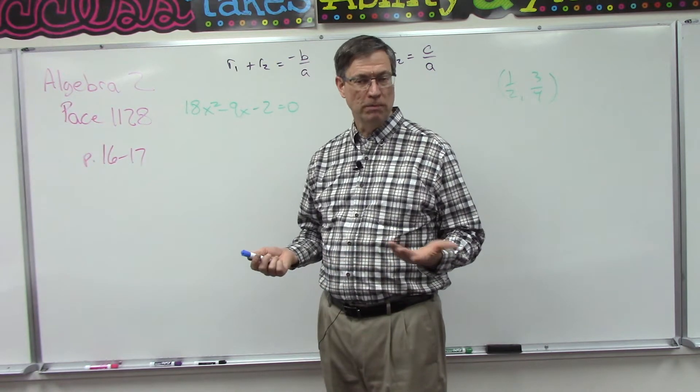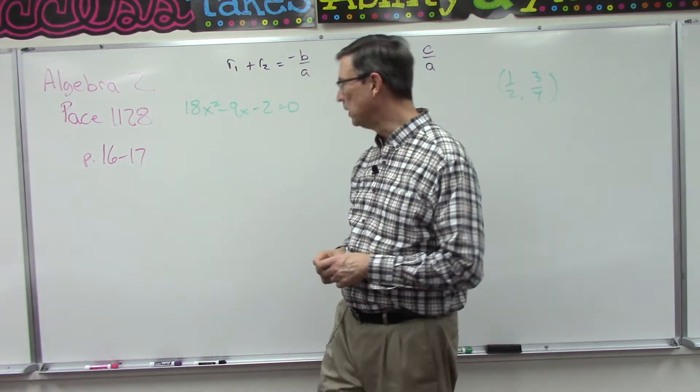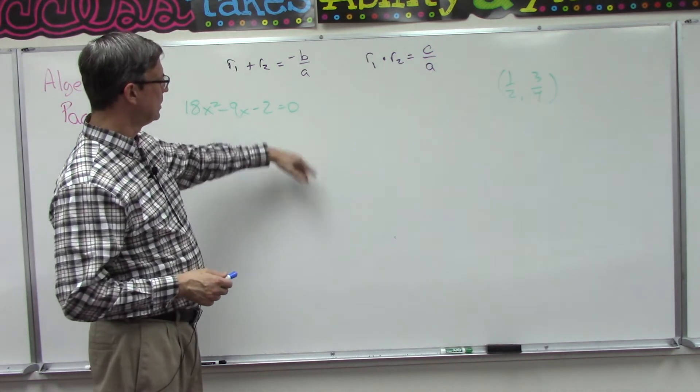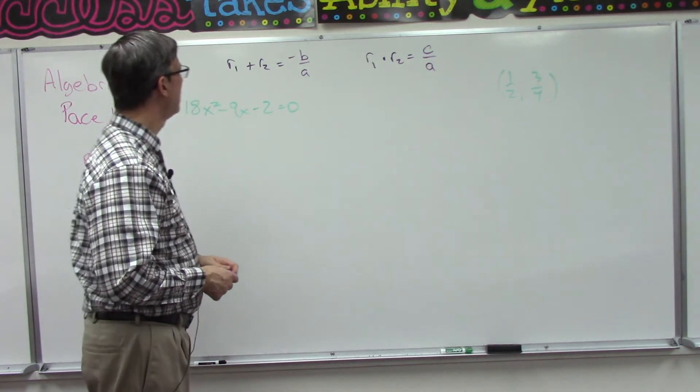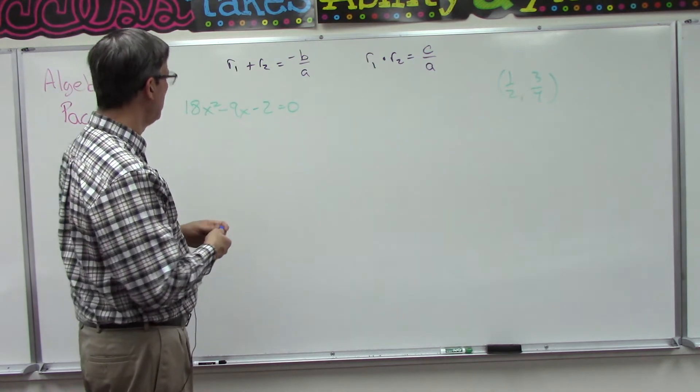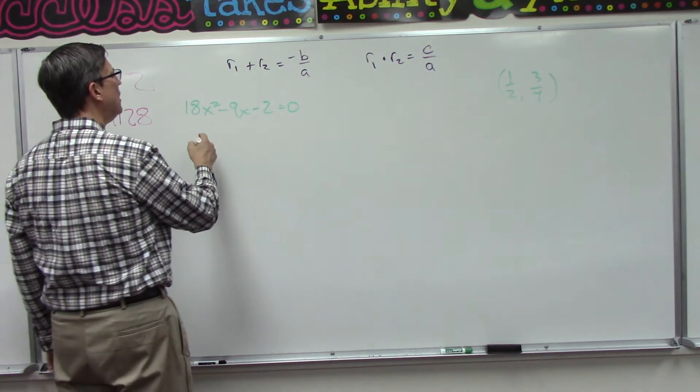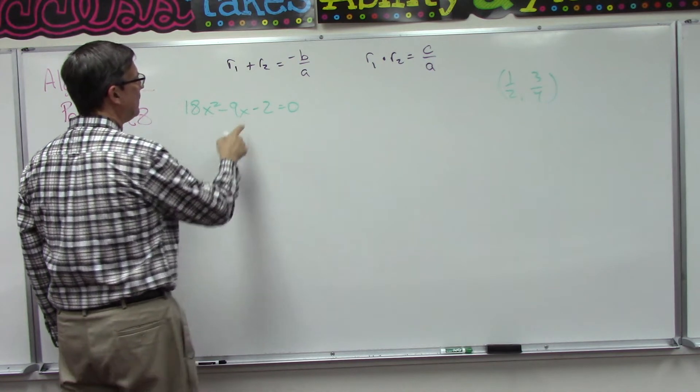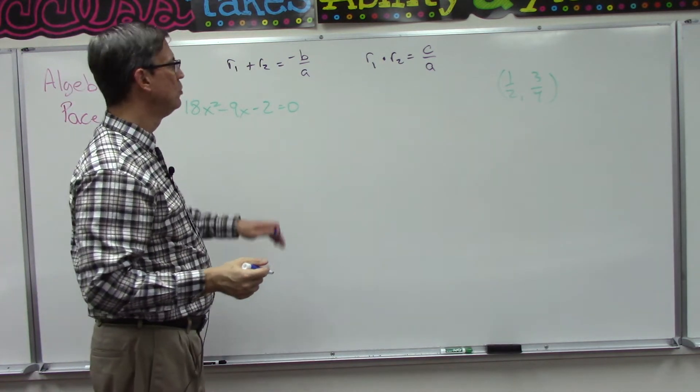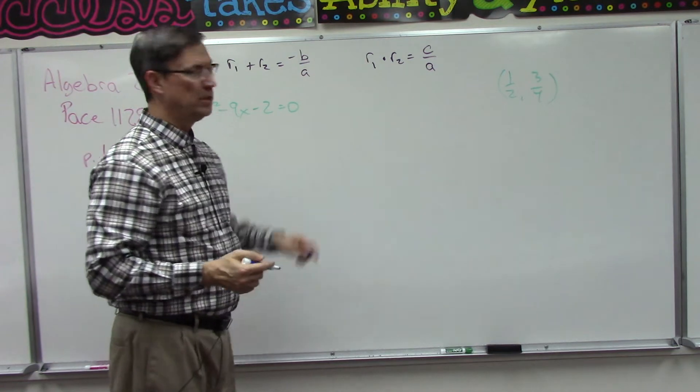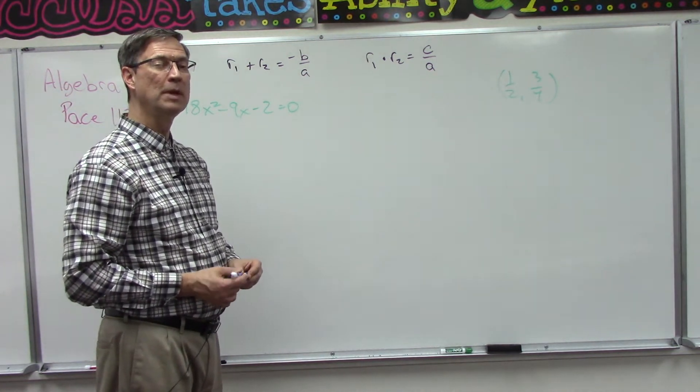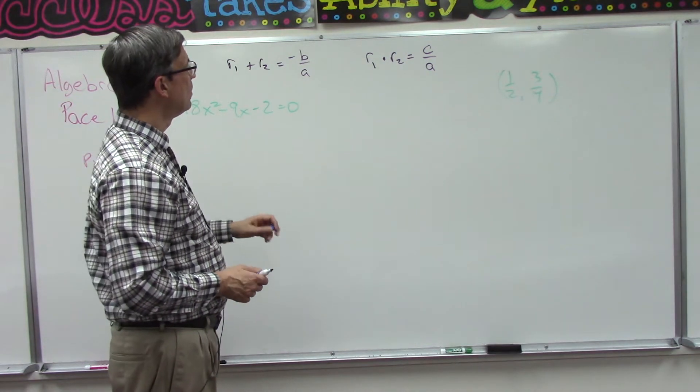If we have this equation - this is one of your math lesson problems - we're going to figure out what is the sum of the roots. The roots would be the x values if we were to solve this using the quadratic equation: negative b plus or minus the square root of b squared minus 4ac all over 2a. We would get two roots, two values for r.